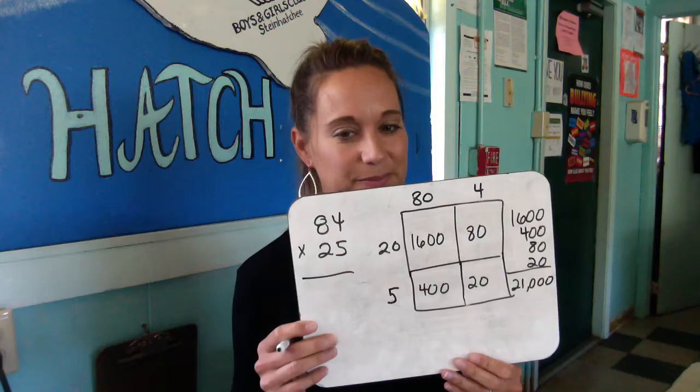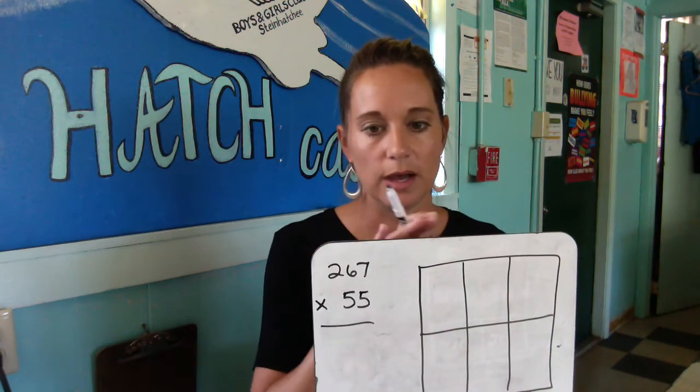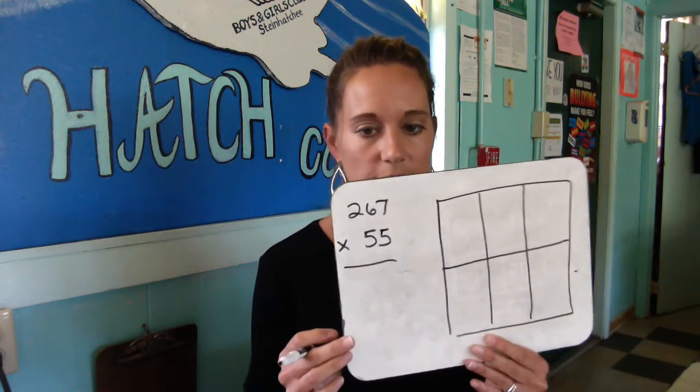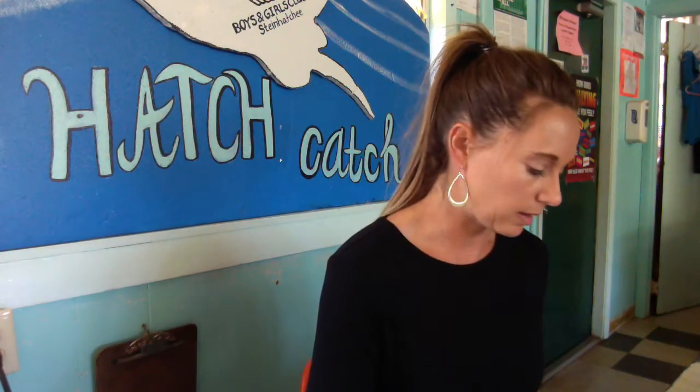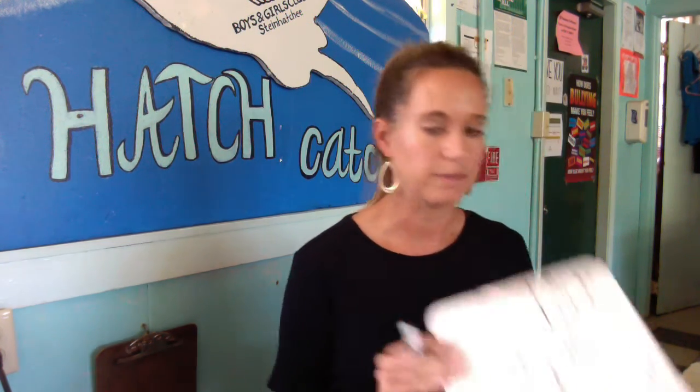Let's do a three-digit times a two-digit, so you can see what that looks like. We're going to do 267 times 55. The top number has three digits, so I'm going to draw three boxes at the top and two boxes down, because 267 has three digits and 55 has two. You would break apart that number to 200, 60, and 7, and then 50 and 5.